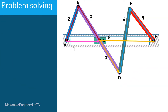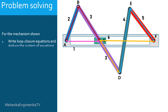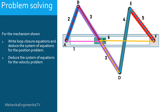In this problem, we are asked to answer the following questions related to the mechanism shown here. First, it is asked to write the loop closure equations and then deduce the system of equations for the position problem. Then, it is asked to deduce the system of equations for the velocity problem. Finally, it is requested to write the velocity system of equations in the form of a matrix equation.